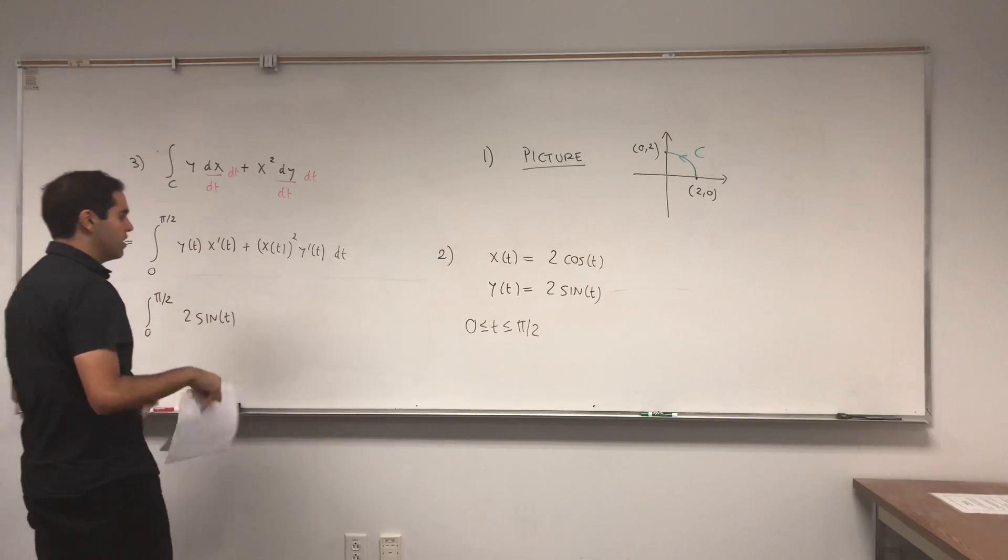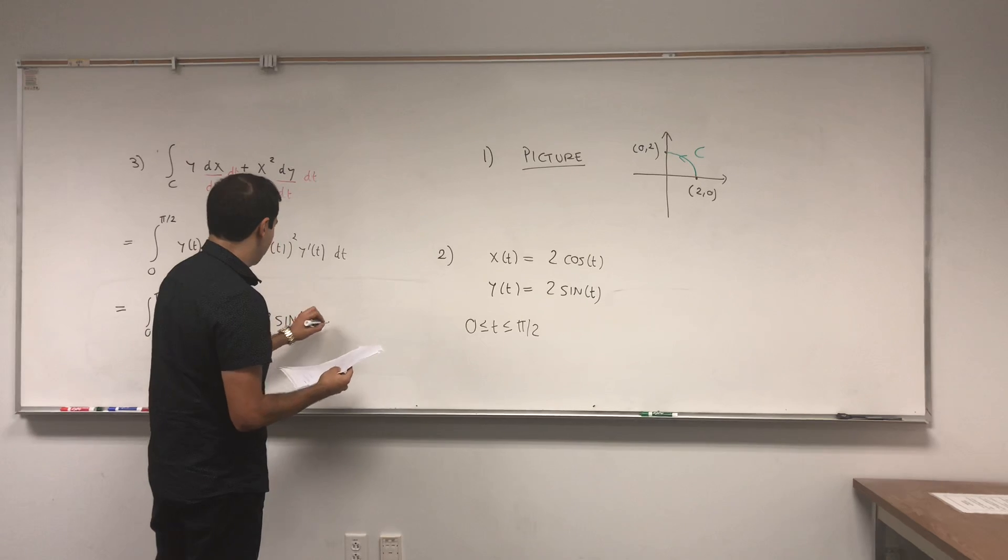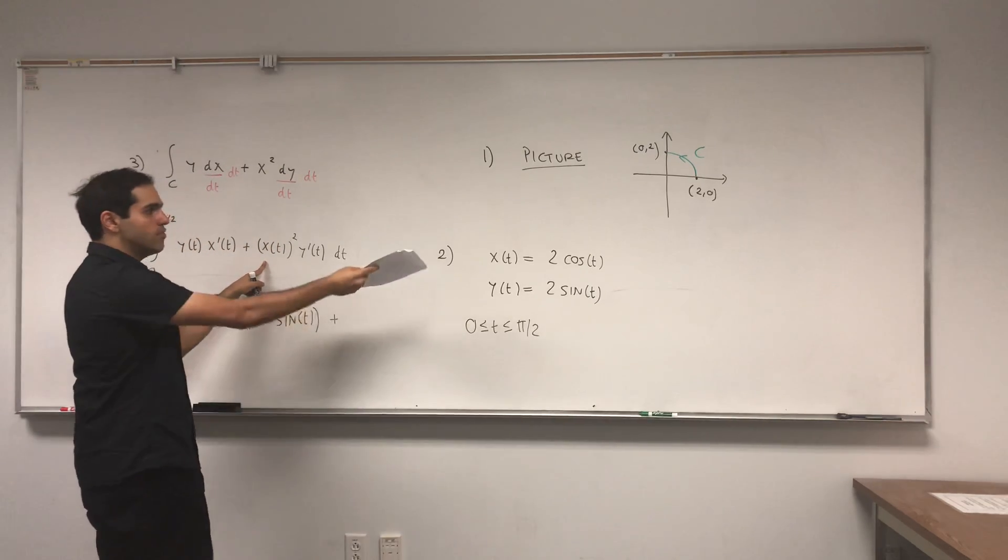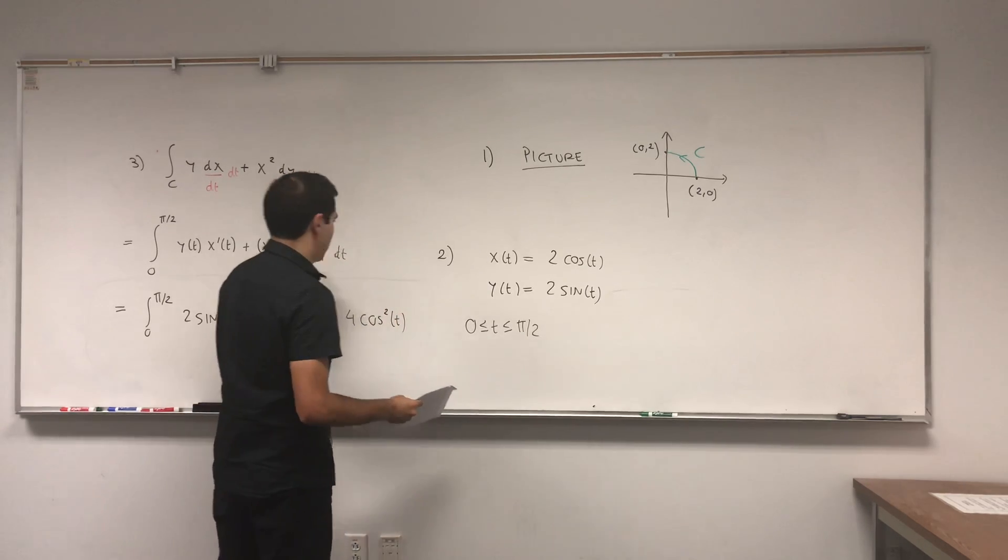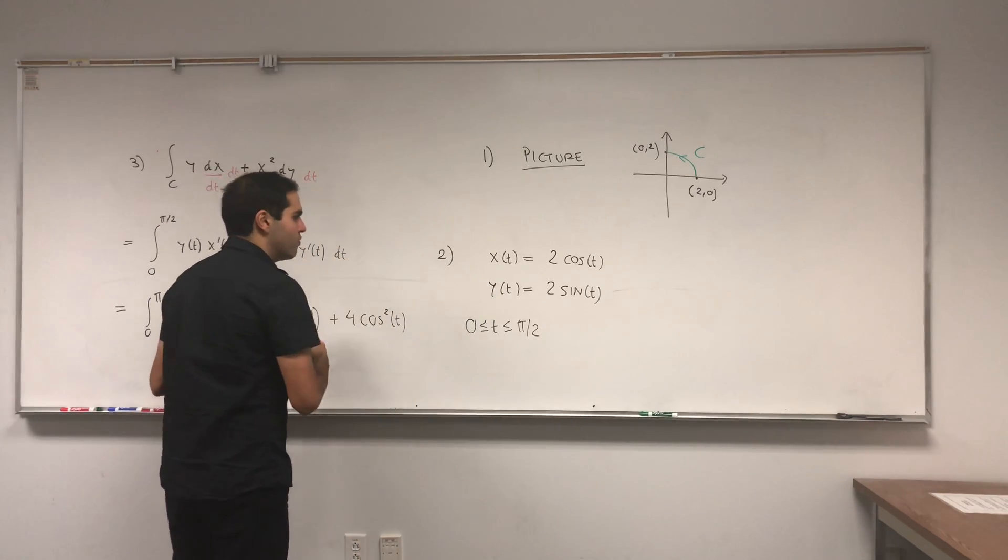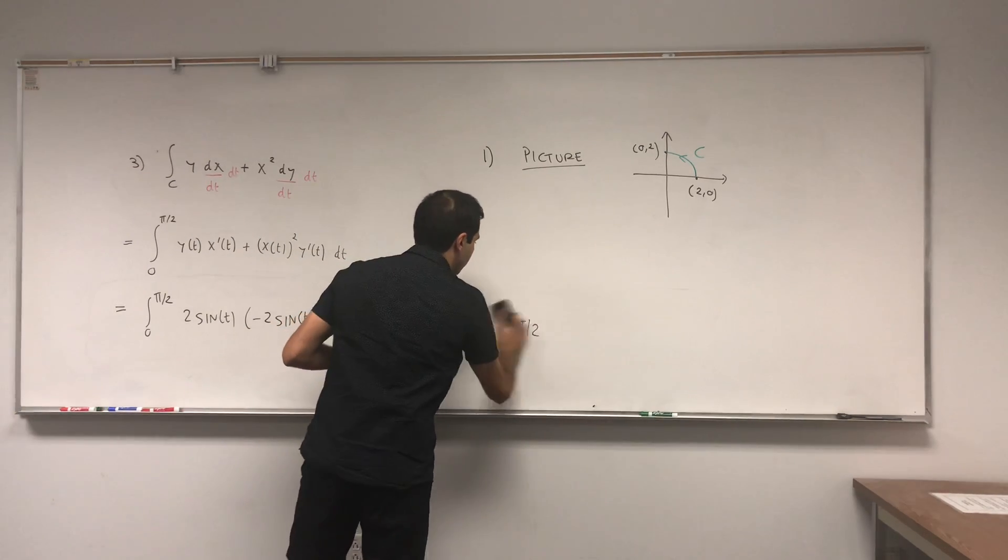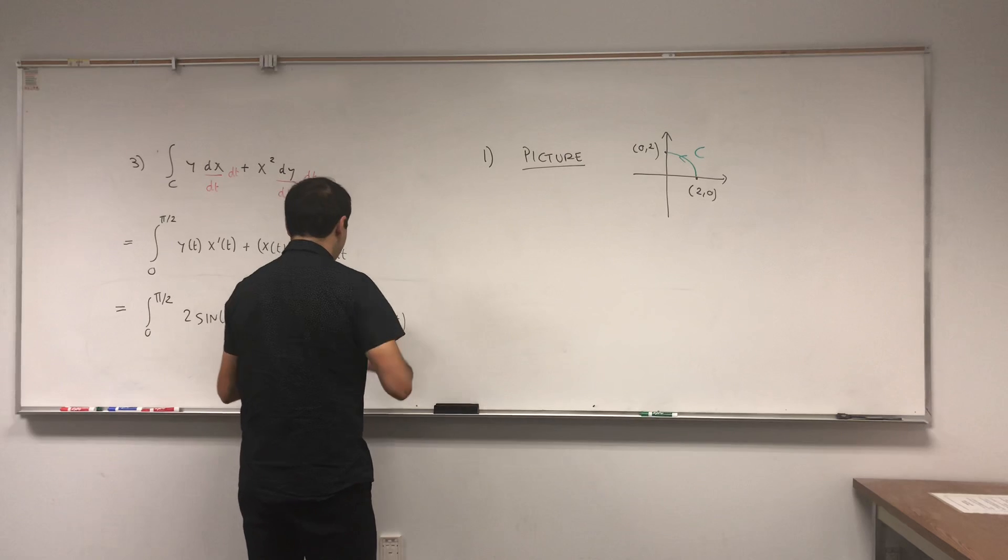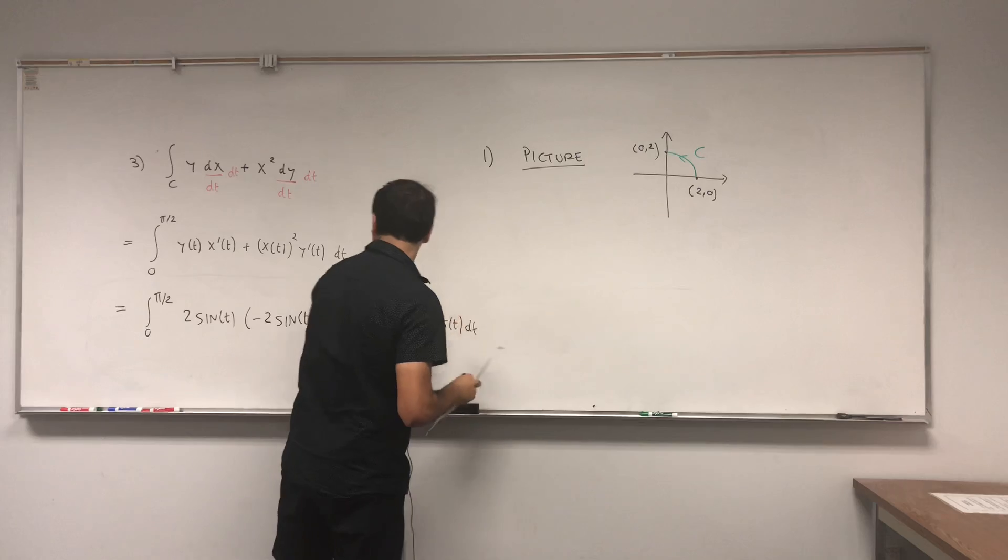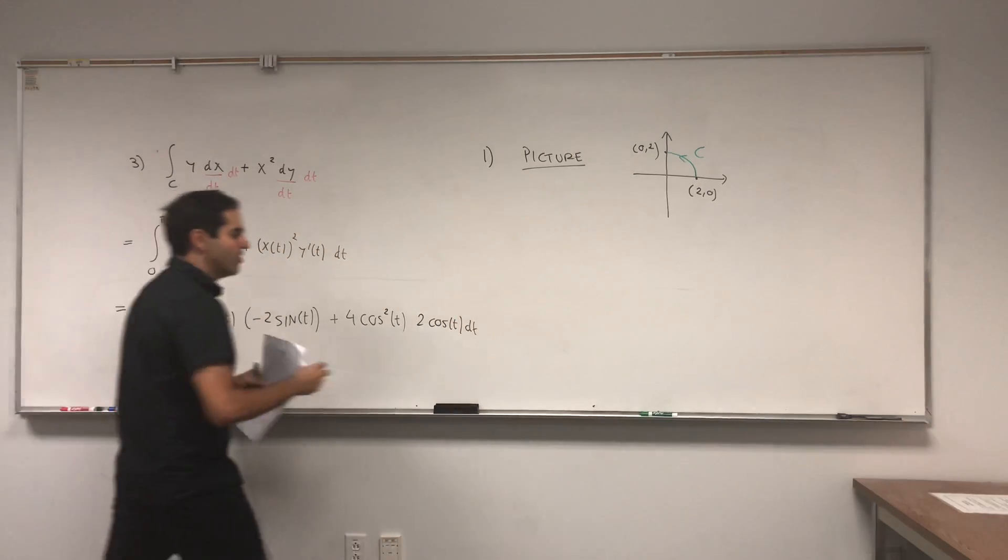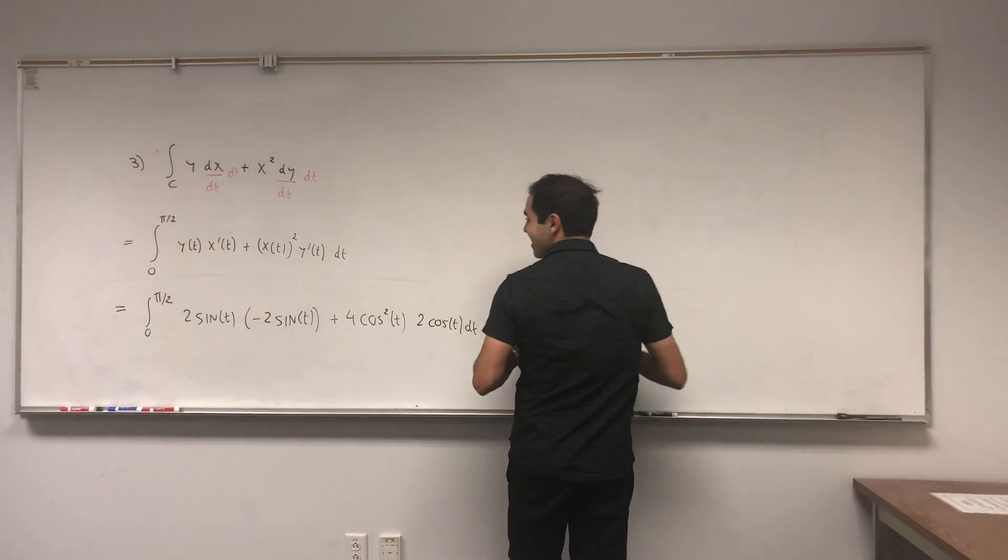So it's good to put t values at the endpoints, and in this case because we have the quarter circle, t is from 0 to pi over 2. So we do that and then you just plug in x of t and y of t. So y of t is 2 sine t, x of t is 2 cosine t, but if you differentiate this you get minus 2 sine t. x of t squared becomes 4 cosine squared t, and lastly y prime of t is just 2 cosine t.